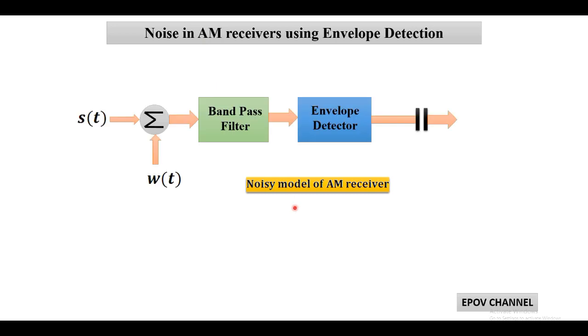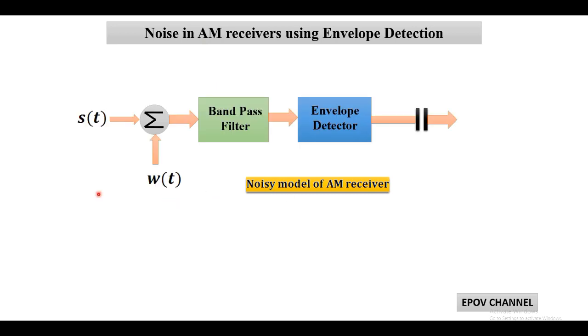The noisy model of AM receiver is shown in the figure. It consists of an input AM signal that is a double sideband full carrier amplitude modulated wave, denoted by S(t).